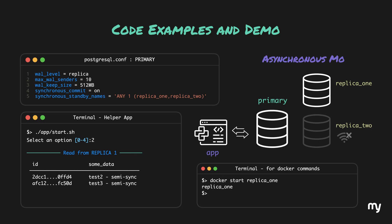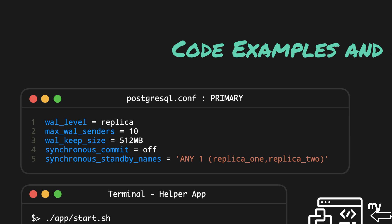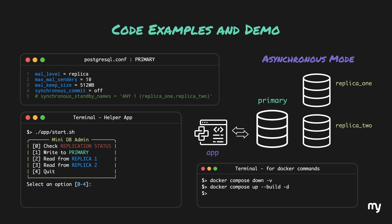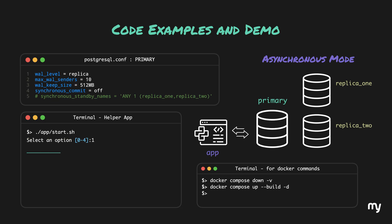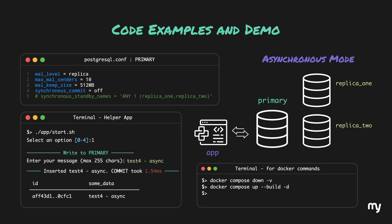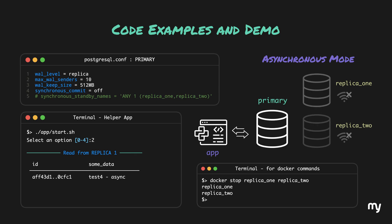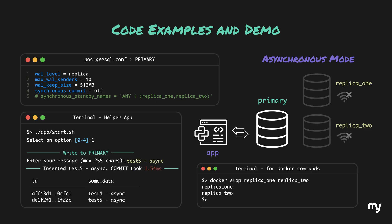Let's try out asynchronous mode as well. We simply turn the synchronous commit to off and remove the standby replica names, drop all the configuration, and start the servers once again. All replicas are healthy. If we write test4-async to the database and check it in our replicas, the data is successfully pushed. Now let's shut down both replicas and write test5-async to the database. The prompt is not blocked and the data is written to the primary while the replicas are offline — meaning the replicas have no clue about this latest data. If the primary crashes now and one of the replicas is promoted, our latest data will be like it never existed.